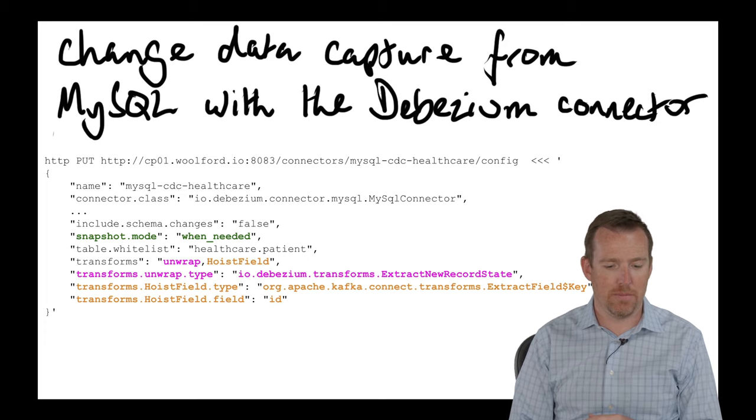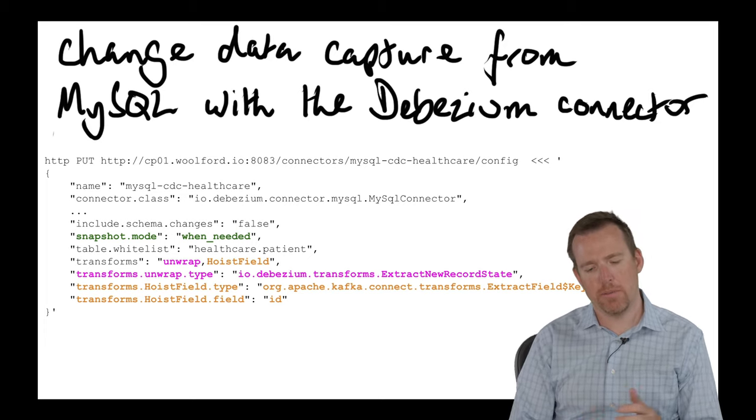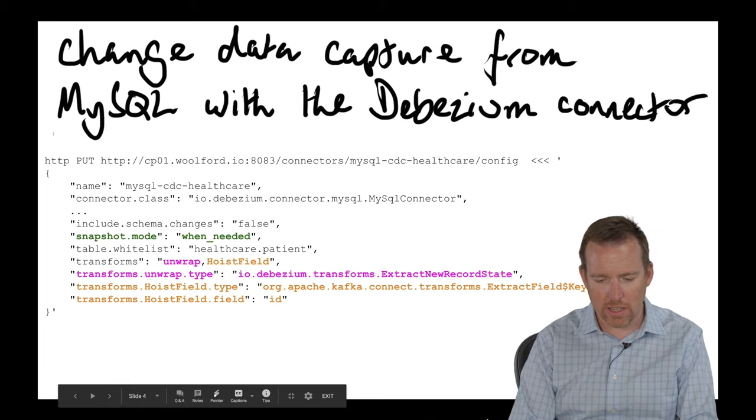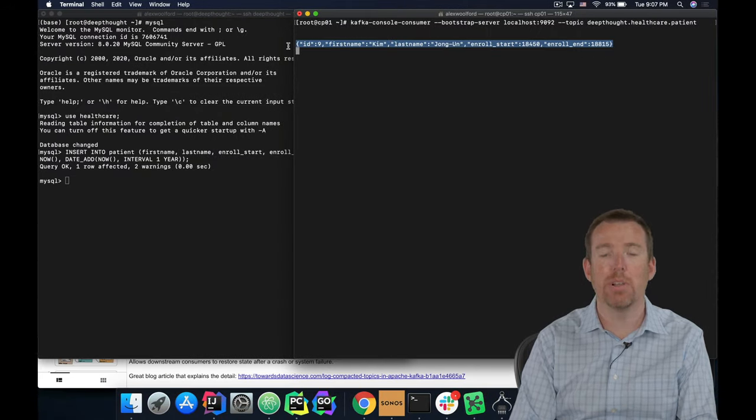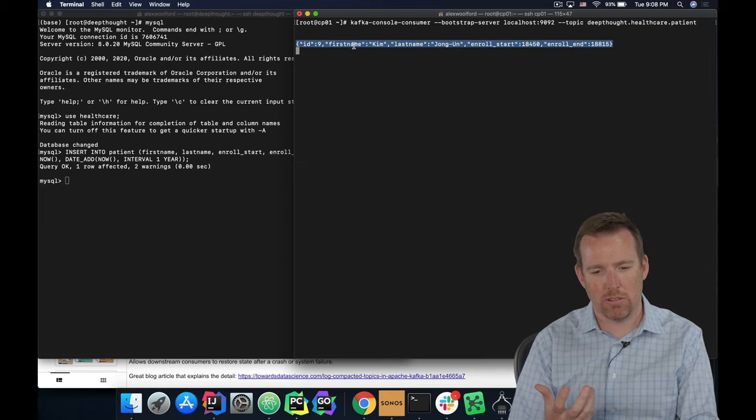Another thing that is important here, this unwrap. I don't know if you remember, but if we look at the console output that got written to Kafka, it's a very minimalistic message. It just contains the keys and the values, but no schema or anything like that.